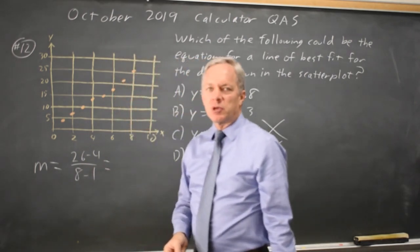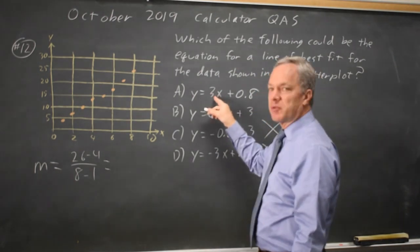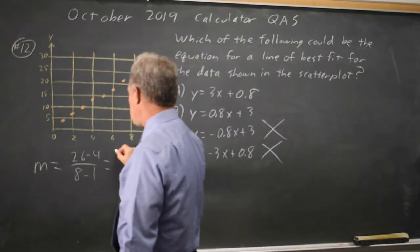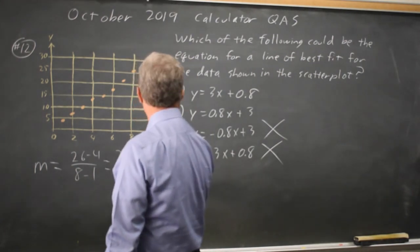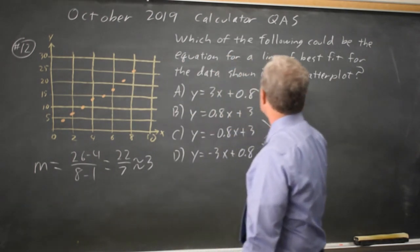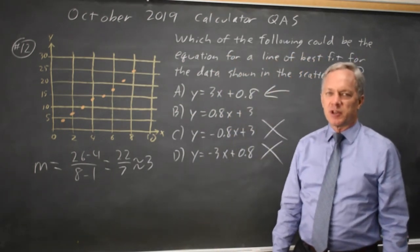And this may be an approximation to the slope, but it should certainly be good enough to tell the difference between a slope of 3 and a slope of 0.8. So that would be 22 over 7, which is about equal to 3. So choice A. That alone is sufficient to identify the correct answer.